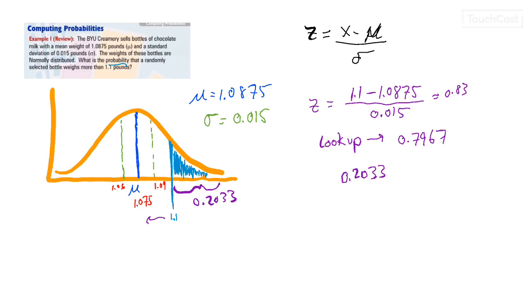And what that says is that there is a small probability that the randomly selected bottle will weigh more than 1.1 pounds. The probability is 0.2033, or 20%.